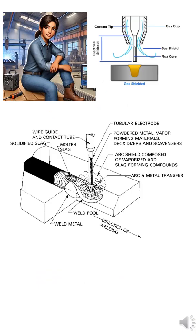Shielding is obtained by the flux contained within the tubular electrode wire, or by the flux and the addition of a shielding gas.